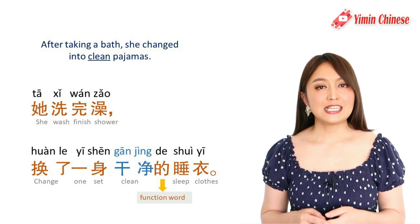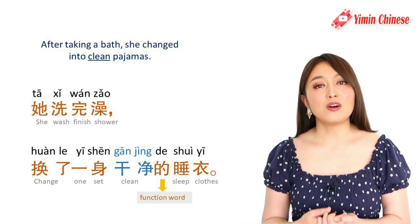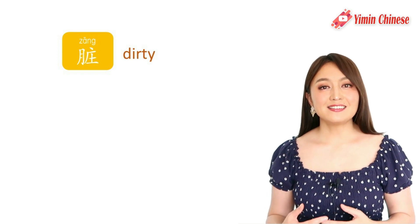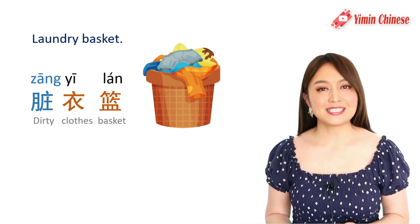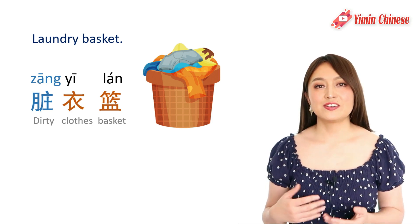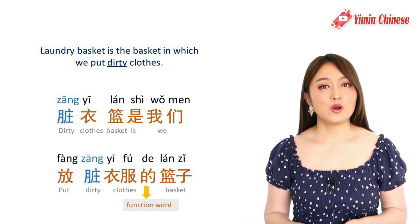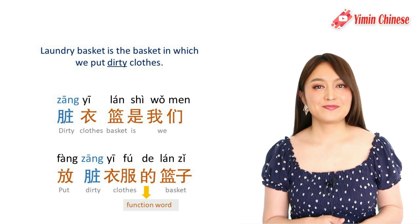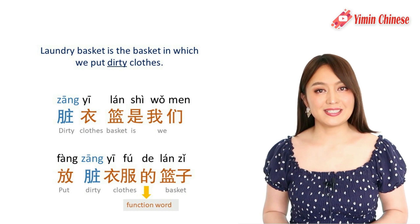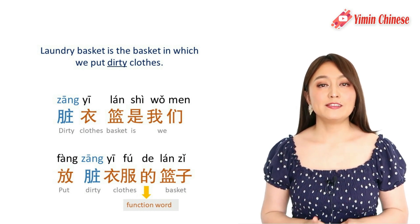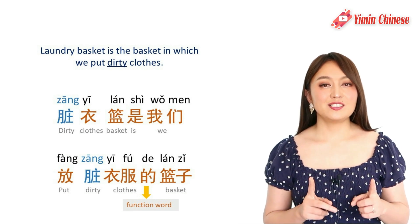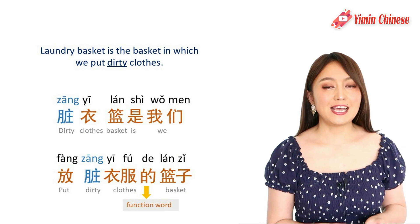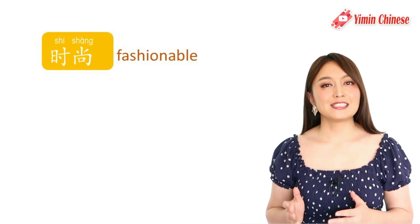Now 干净 means clean. For example: 她洗完澡，换了一身干净的睡衣 — After her bath, she changed into a clean set of pajamas. And the opposite of clean is dirty — 脏. For example: 脏衣篮是我们放脏衣服的篮子 — The laundry basket is the basket in which we put our dirty clothes.